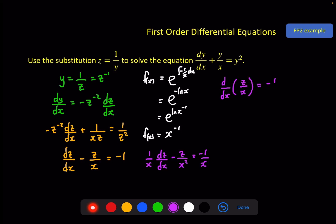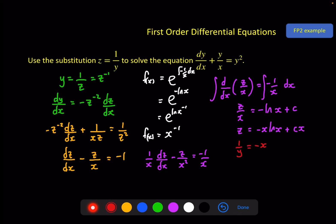So the left-hand side can be rewritten as the derivative with respect to x of z/x. The right-hand side is still −1/x. Integrating both sides with respect to x gives z/x = −ln x + c. Multiplying through by x: z = cx − x·ln x. Now substituting back — since z = 1/y — and rearranging, the final general solution is y = 1/(cx − x·ln x).